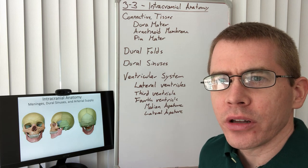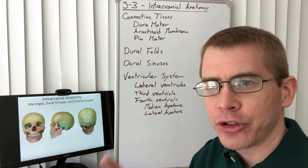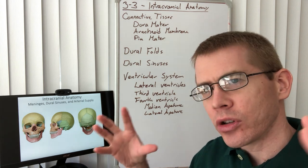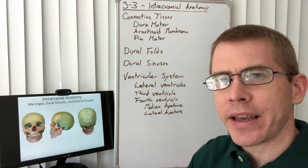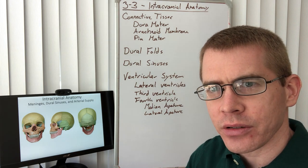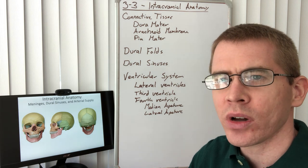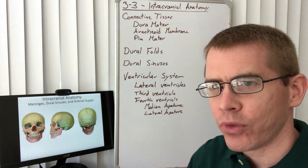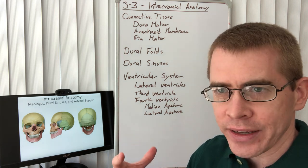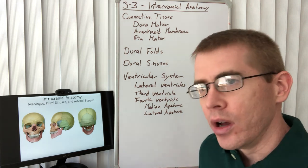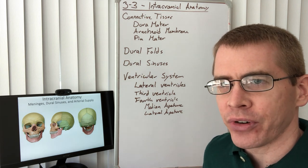Welcome to the first half of lecture 3-3. This is where we start to get into the intracranial anatomy, going from outside to in. We'll learn about the connective tissue, the different types of sinuses and folds in the brain, and the ventricular system, before moving deeper to look at the arteries, veins, and the gyri and sulci that make up the brain and their functional elements.